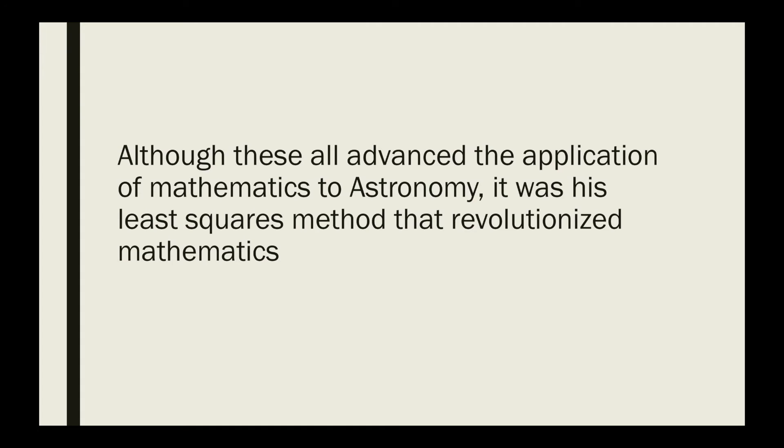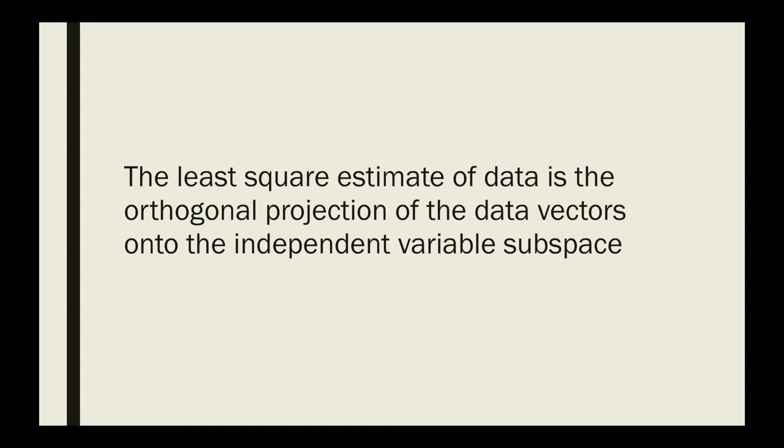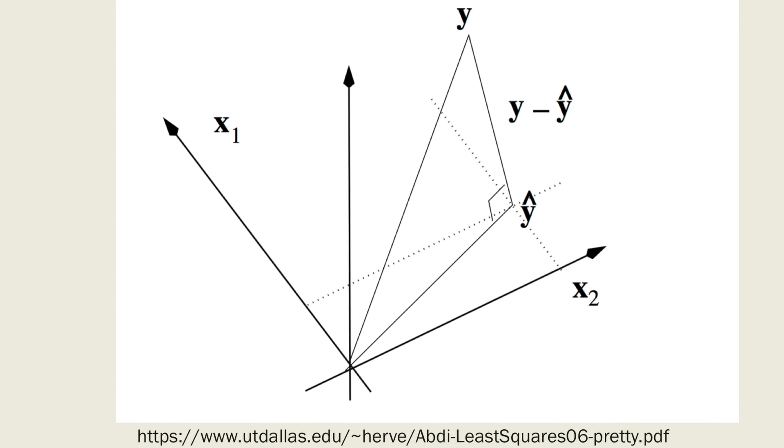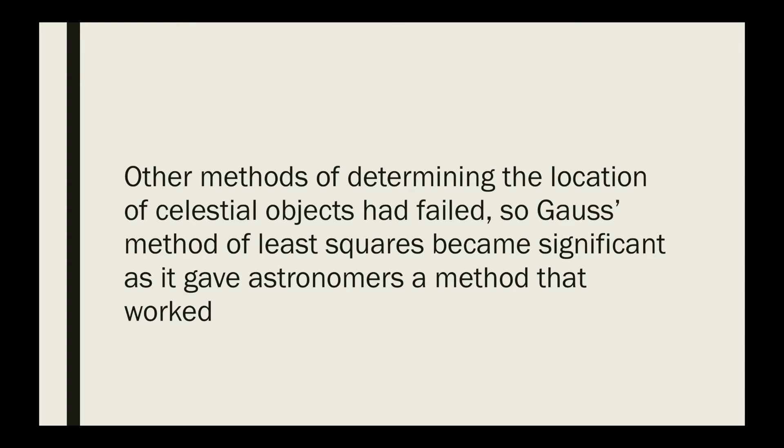So what does this method of least squares involve? The least square estimate of data is the orthogonal projection of the data vector onto the independent variable subspace. At the time, this impacted many astronomers and mathematicians working in the same field, simply because other methods of determining locations of celestial bodies had failed.